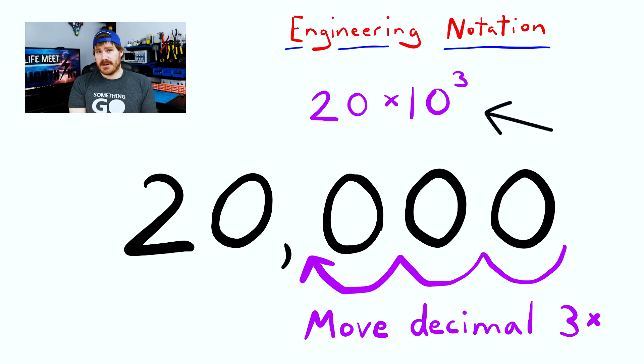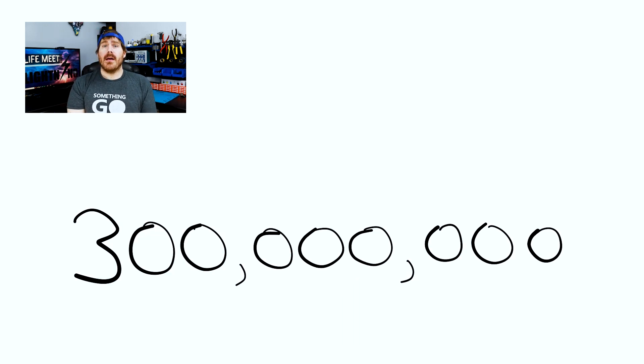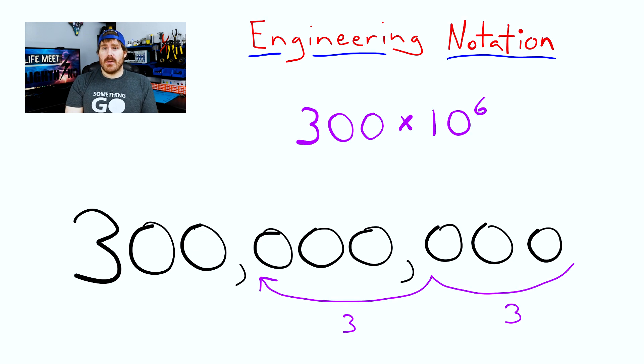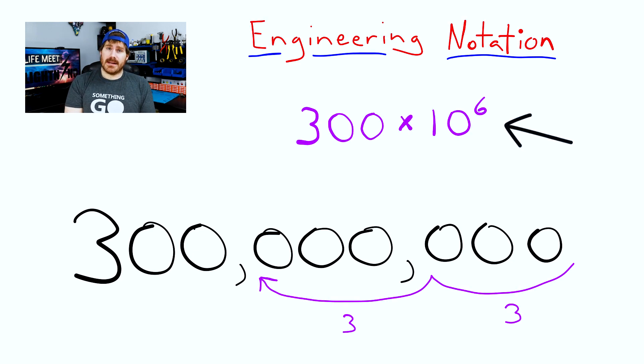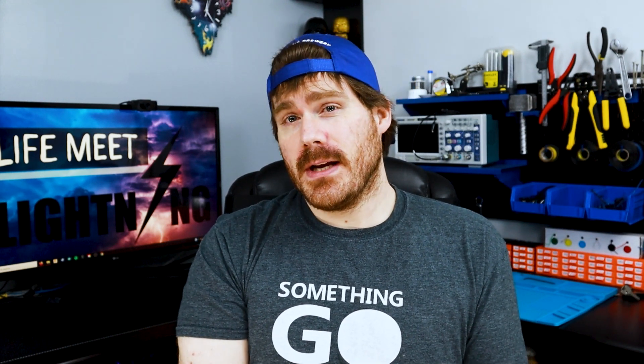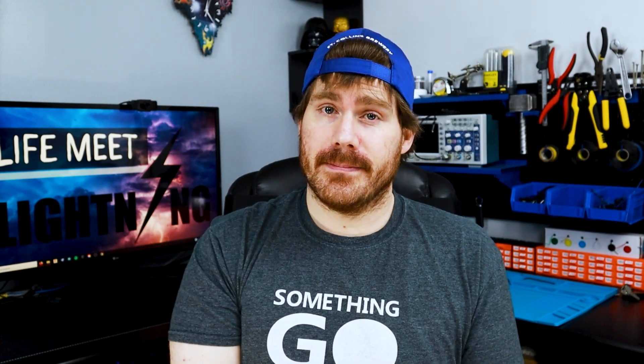Let's take a look at another example. Moving the decimal in multiples of 3, we would end up with 300 times 10 to the power of 6. Here comes the infamous practice card. Pause the video and work through the practice questions. I'll show you the answers after a few seconds.